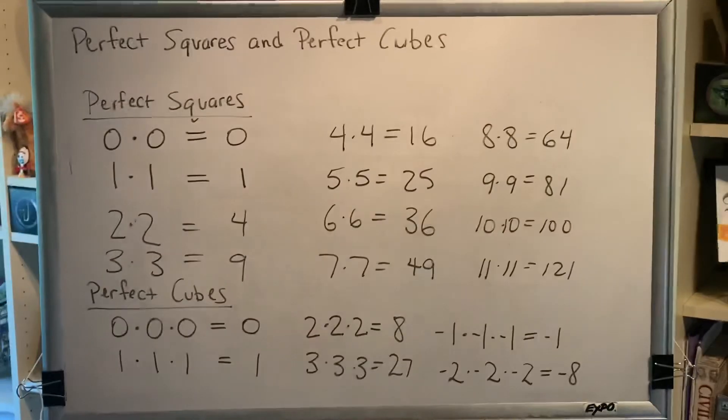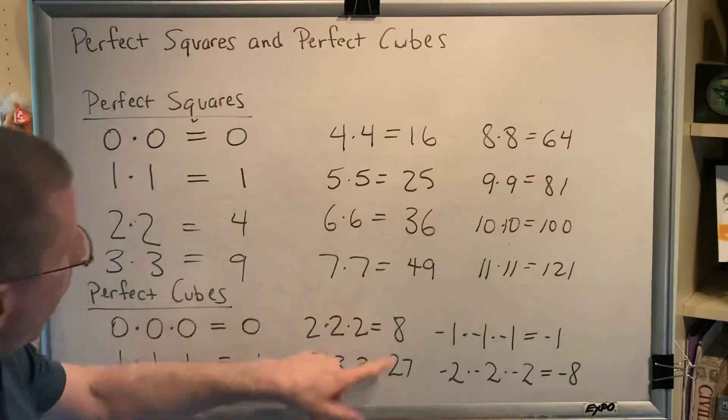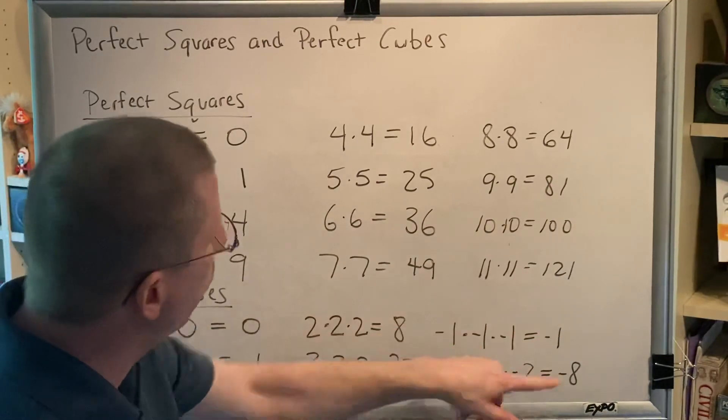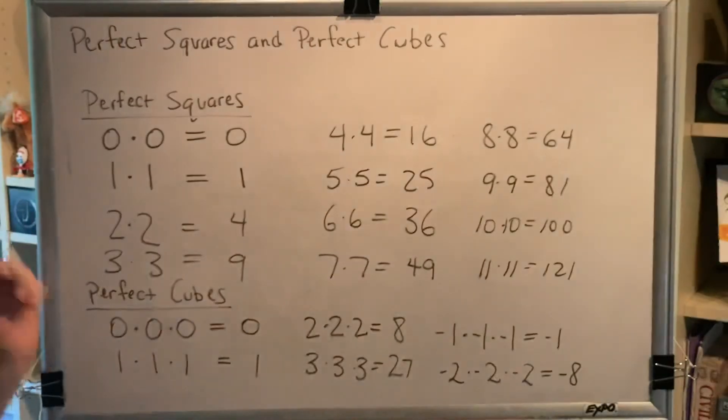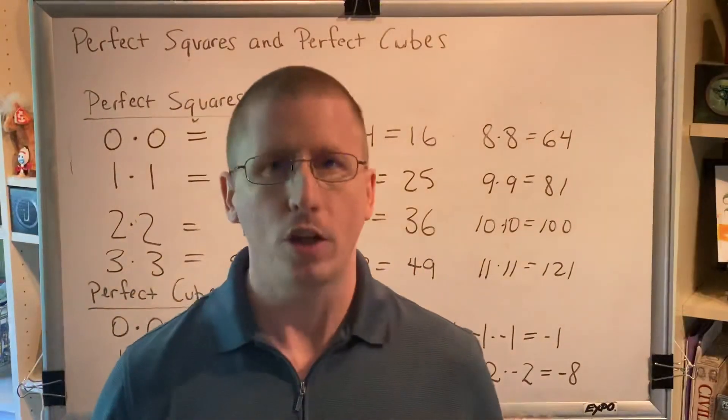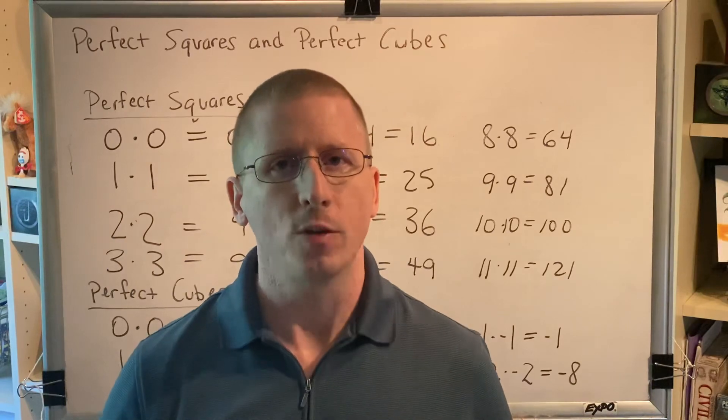So, we now have several examples of numbers that are perfect cubes: zero, one, eight, twenty-seven, negative one, negative eight. Knowing your perfect squares and your perfect cubes comes in handy sometimes when working with algebra.